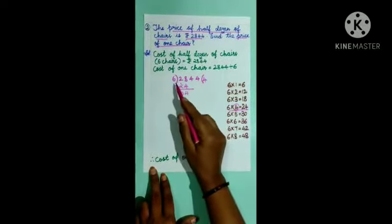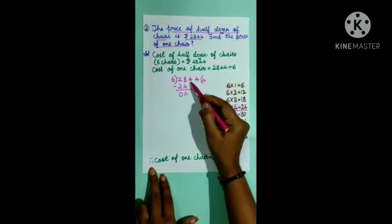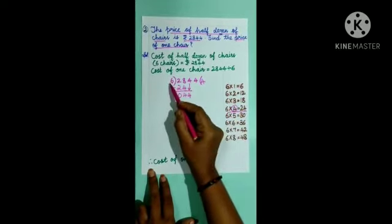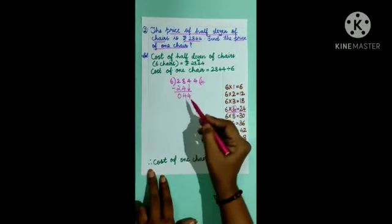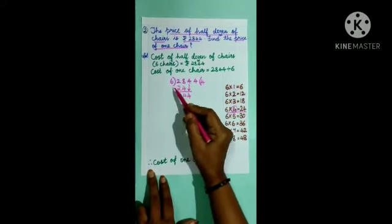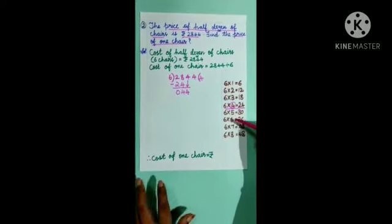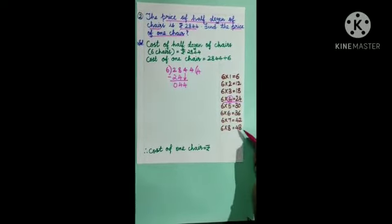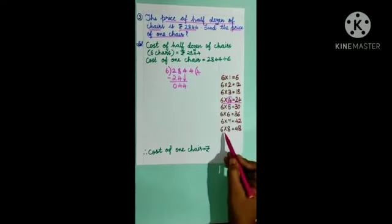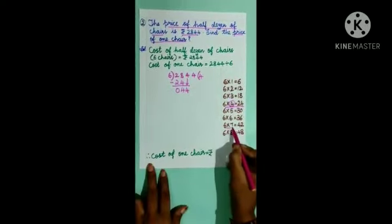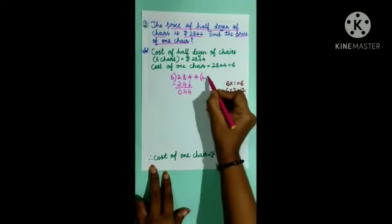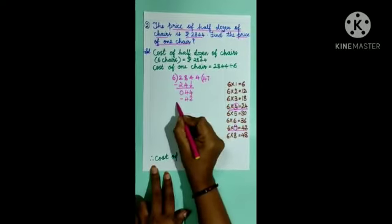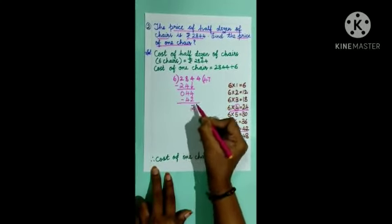4 is lesser than 6, so we consider the next tens place digit, 4. Now the number is 44. Compare 44 with divisor 6: 44 is greater than 6, so we can divide 44 by 6. From the table of 6, the nearest product is 42 (since 48 is greater than 44). We write 7 in the quotient, write 42 under 44, and subtract: 44 minus 42 equals 2.